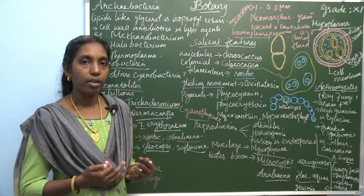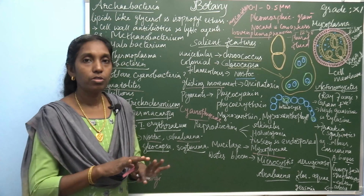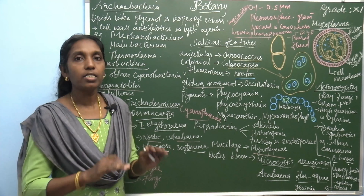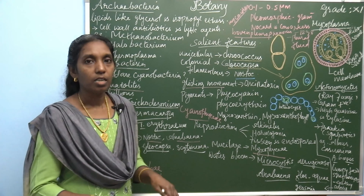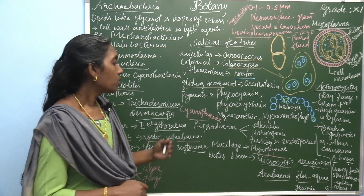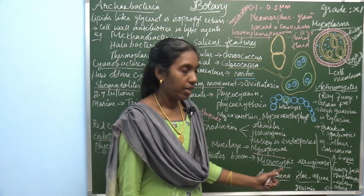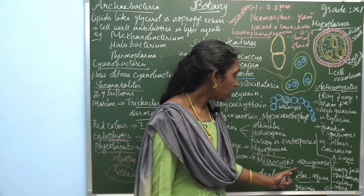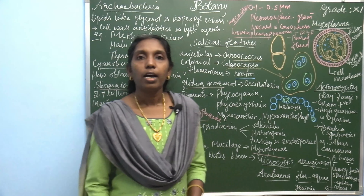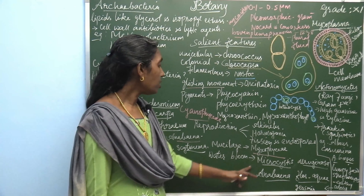Most cyanobacteria form water bloom. Due to the abundance of these species, they cause toxic substances to be released, which prevent proper sunlight and aeration in the water, leading to oxygen depletion. Examples of water bloom species are Microcystis aeruginosa and Anabaena flosaquae.